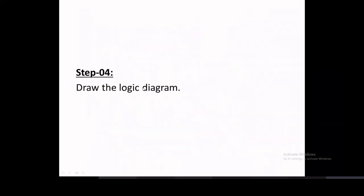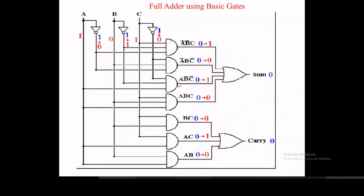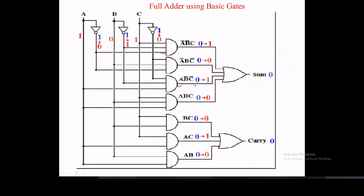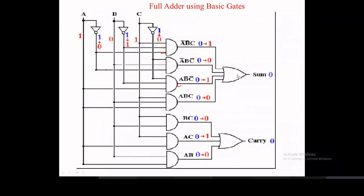The third term A·B·C uses A, B, and C directly into a three-input AND gate. The fourth term A-bar·B·C-bar uses A-bar, B, and C-bar as inputs. For the sum output, the outputs of all four AND gates are fed into an OR gate, giving the final sum.